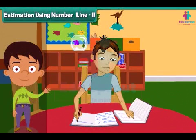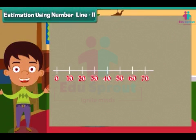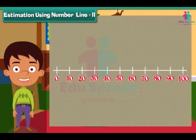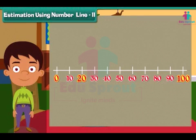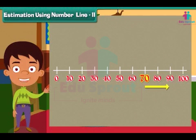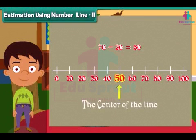Estimation using a bigger number line. Let us now consider a number line from 0 to 100. Can you guess the position of number 20 on this line? It will be near 0. What about number 70? Yes, number 70 will be near 100. Subtracting 20 from 70 we get 50, and the position of 50 will be the center of the line.